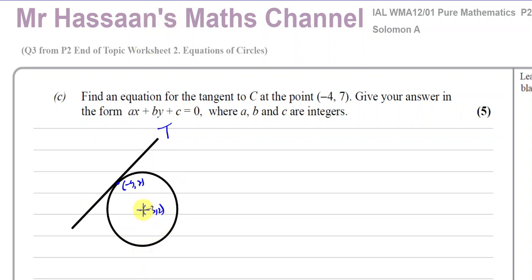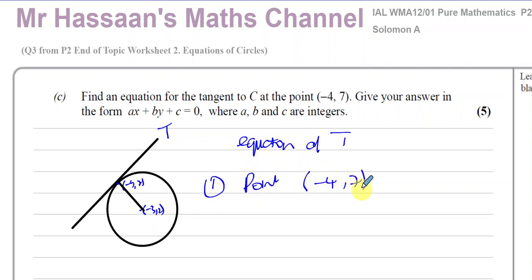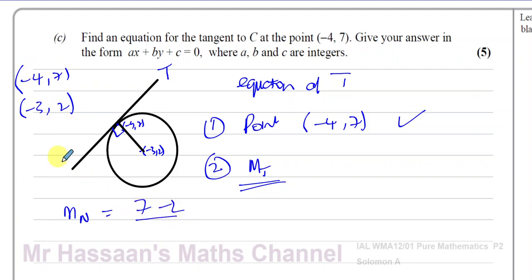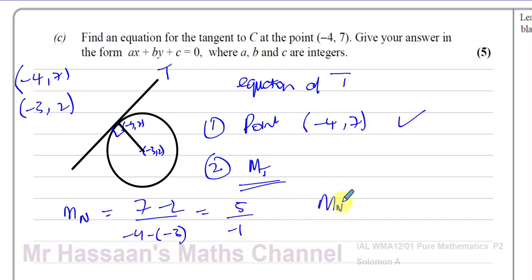To find the equation of the tangent, we need a point on the tangent — which is negative 4, 7 — and the gradient of the tangent. We find the gradient of the tangent by first finding the gradient of the normal, which is perpendicular to the tangent. The gradient of the normal is the change in y, which is 7 minus 2, over the change in x, which is minus 4 minus minus 3, giving 5 over negative 1, so the gradient of the normal is negative 5.